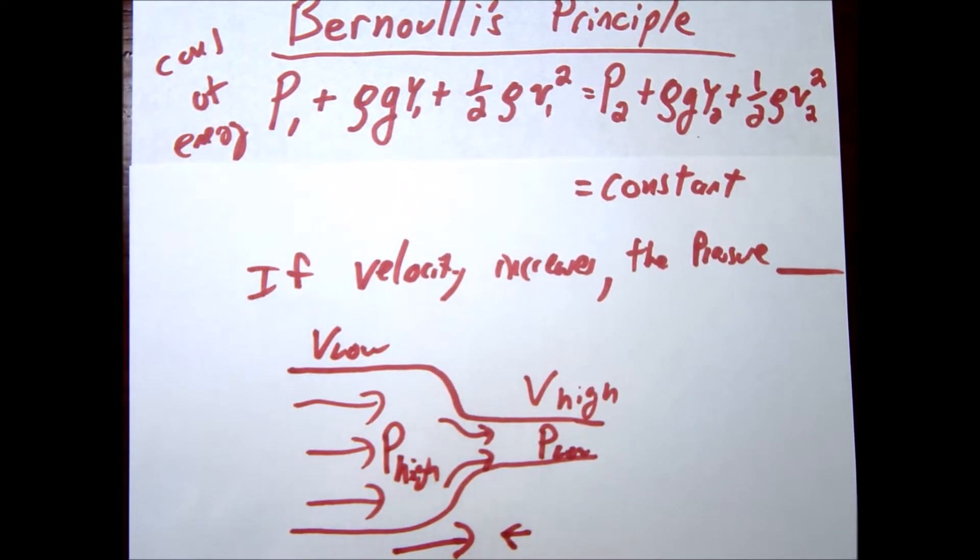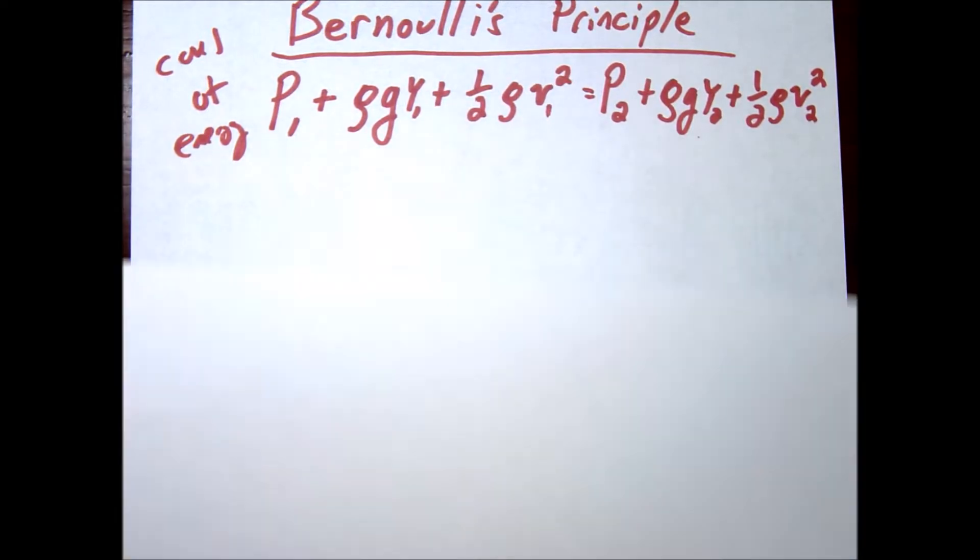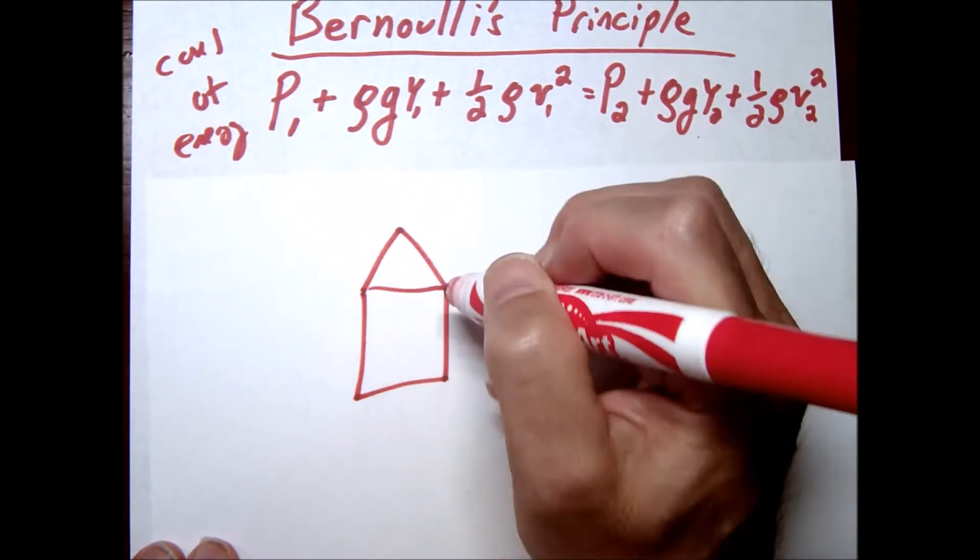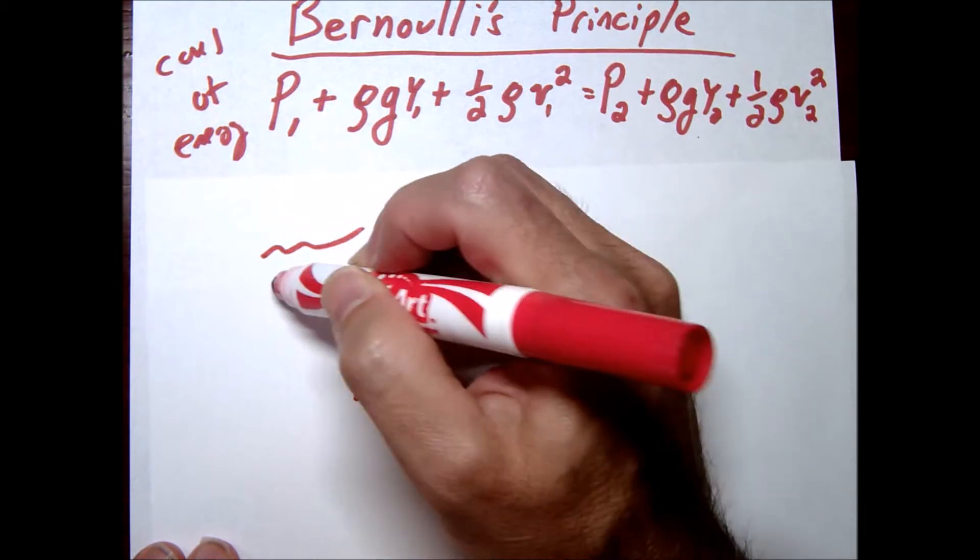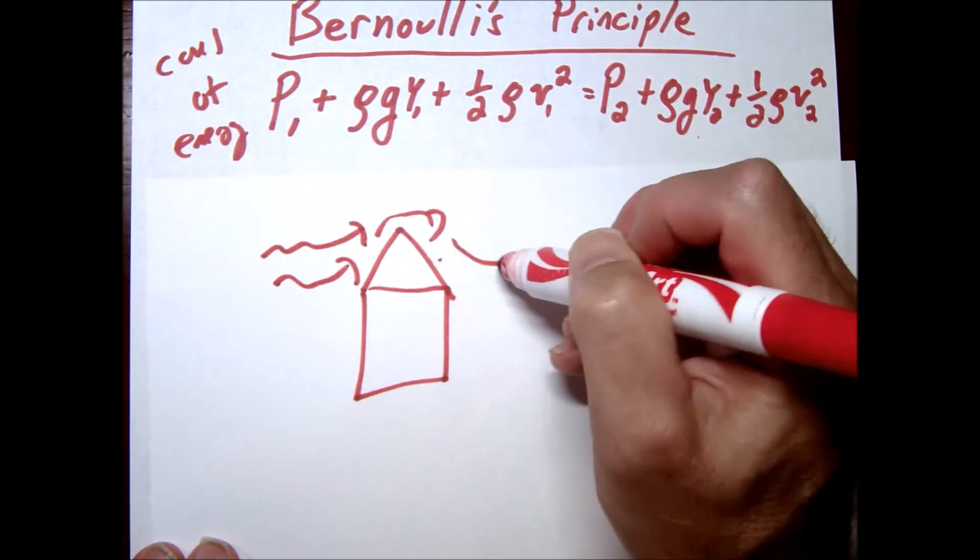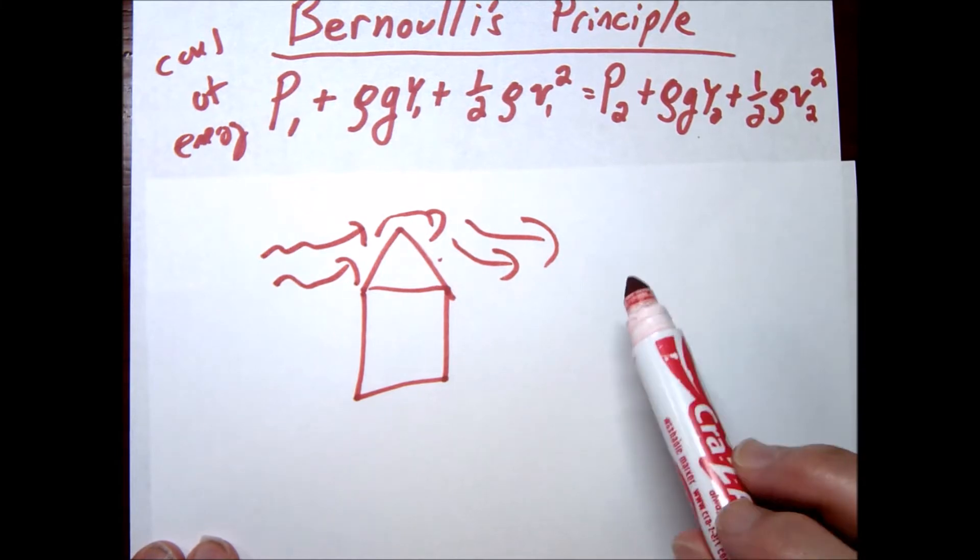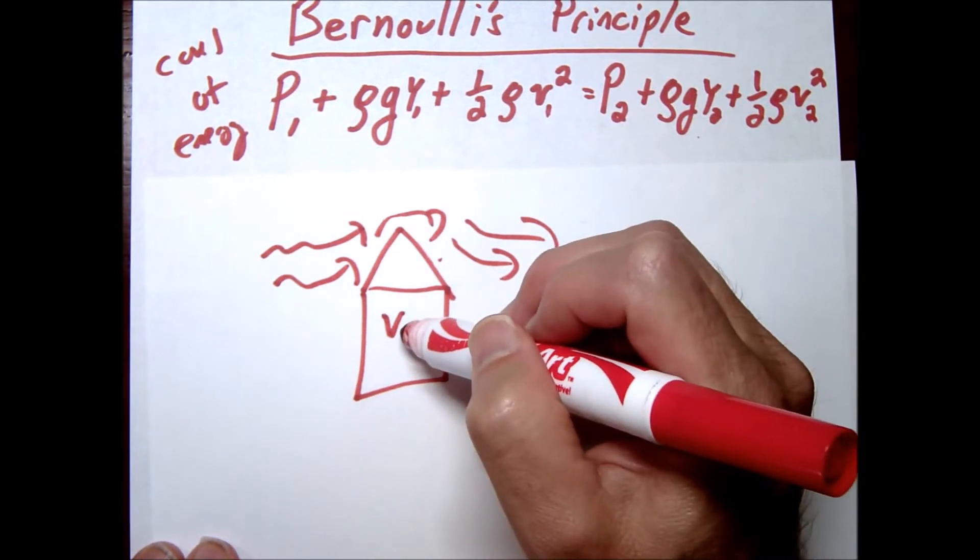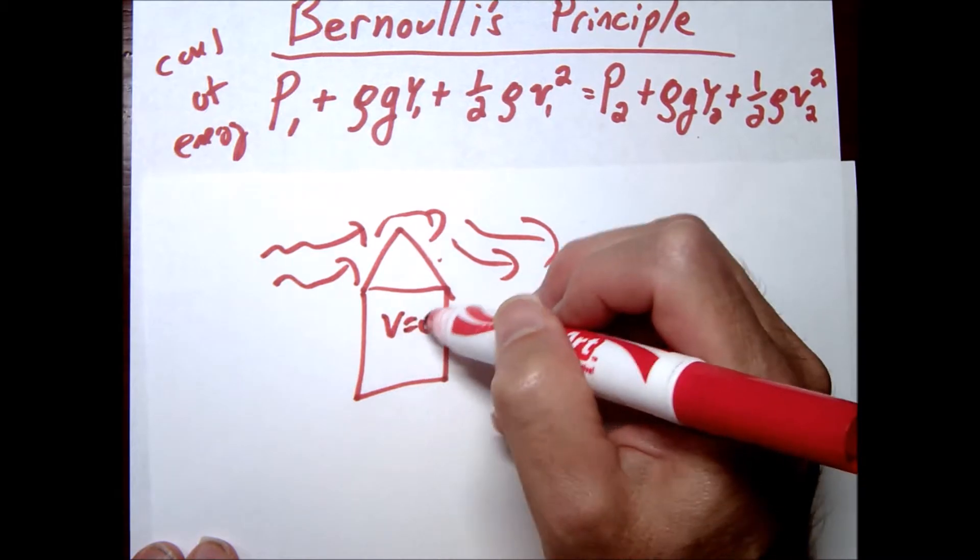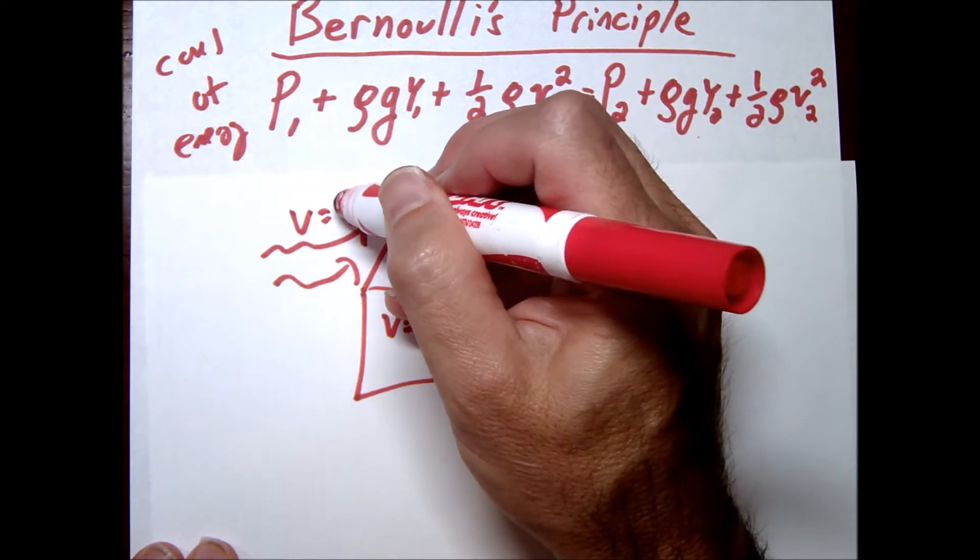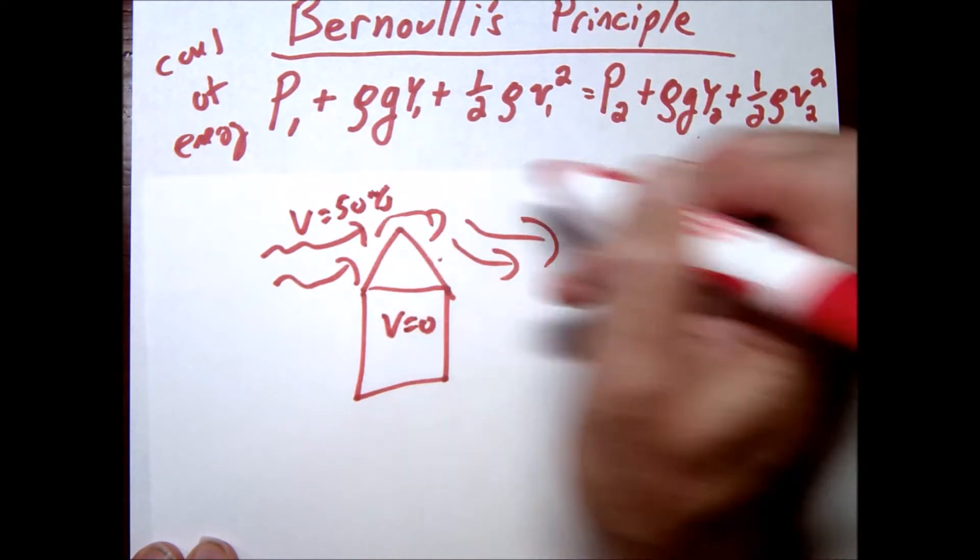Let's look at some kind of applications of this or where you might see this. For example, let's take a house, and let's say there's a big wind, like in a hurricane for example. Here's our wind like this. So we would say the velocity inside the house is basically zero. The velocity outside the house is fast, maybe it's 50 meters per second moving outside.